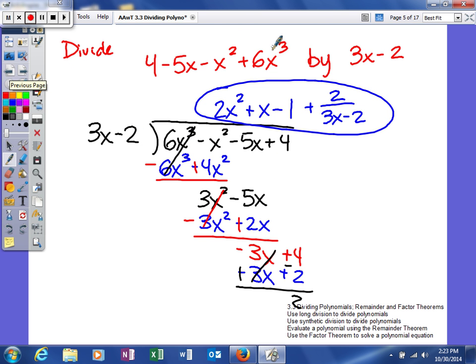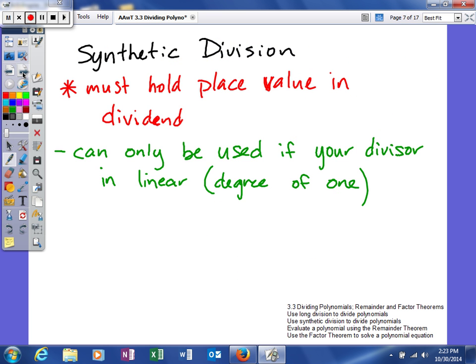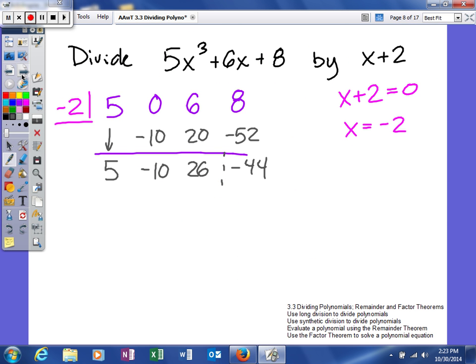Here, you had a degree of your dividend being 3, the degree of your divisor was 1, and the degree of your quotient was 2. So, hopefully, what you're starting to see is a little pattern that to get your answer, the degree of your answer, all you have to do is take the degree of your dividend and subtract it by the degree of your divisor. And that will give you the degree of your quotient.